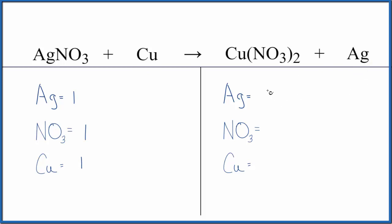Product side, we have the one silver, and then we have one nitrate times two. So we have two of those and one copper. So by counting this polyatomic ion as one thing, it makes it a lot easier to balance. You'll get the same answer either way. It's just a lot faster.